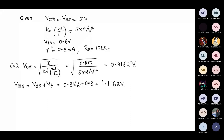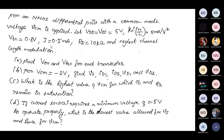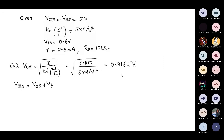For Part B, we calculate the drain current and the voltage at the drain. In common mode operation, the bias current is equally divided between the two drains, so ID1 and ID2 are each equal to I by 2. We also calculate VS using the relation VS equals VCM minus VGS.